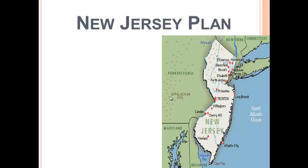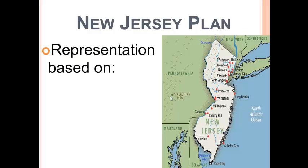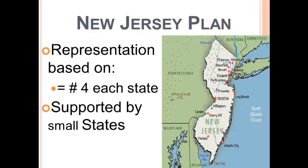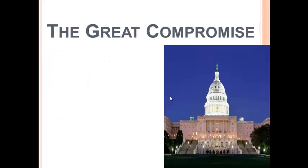The other plan was the New Jersey Plan, or the small state plan. New Jersey is a pretty small state, so they were concerned about being outnumbered in Congress or having too much representation from large states. They proposed that representation be equal, and argued that each state should have equal representatives. This was supported by New Jersey and other small states. So we have two conflicting plans — what are we going to do to work it out?